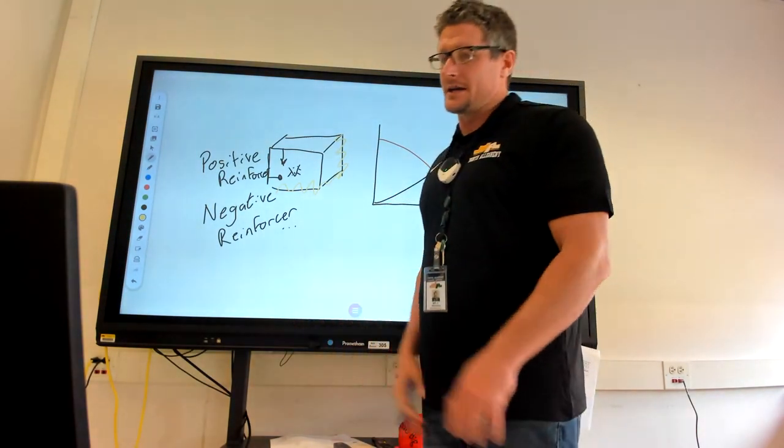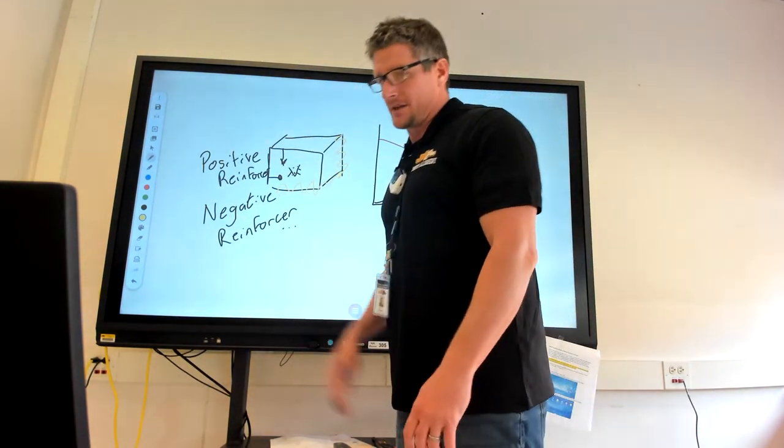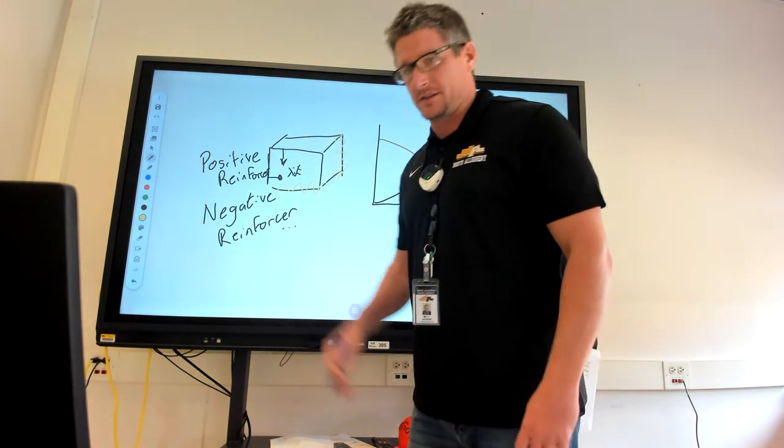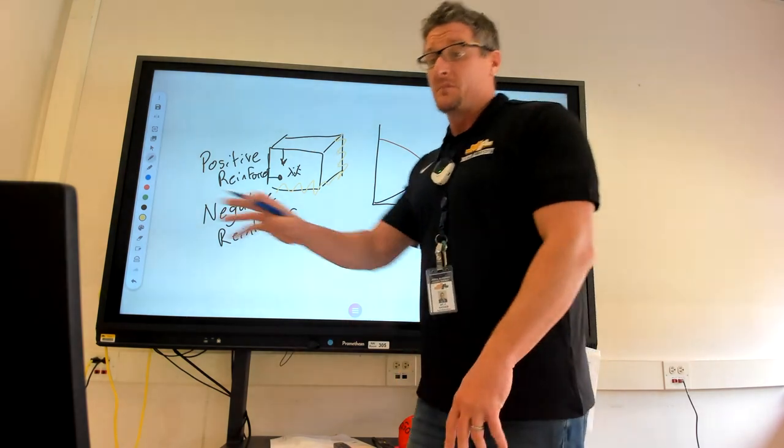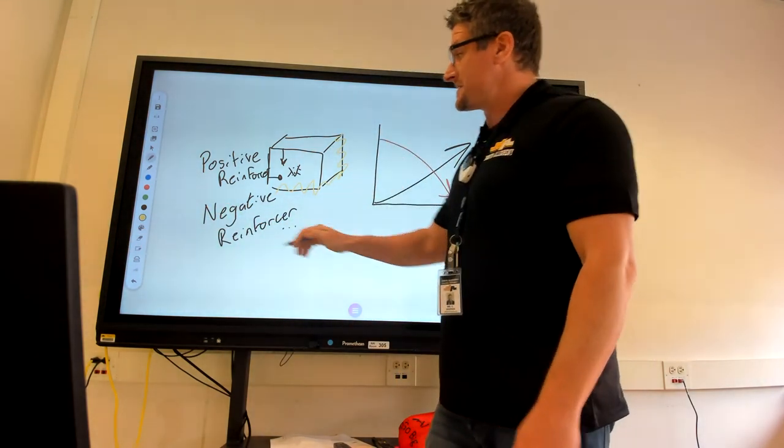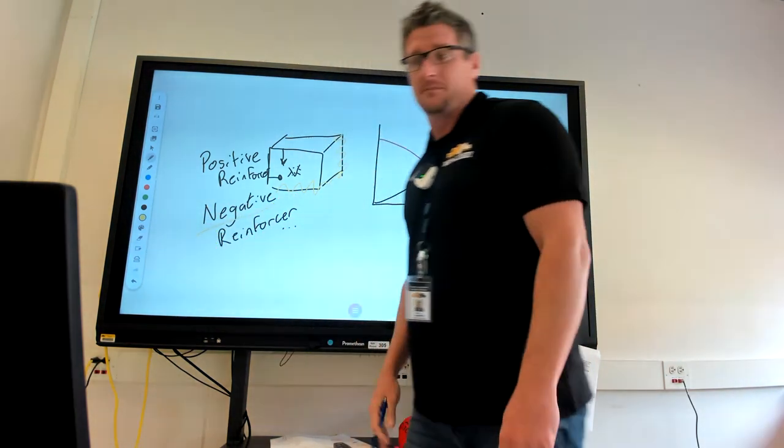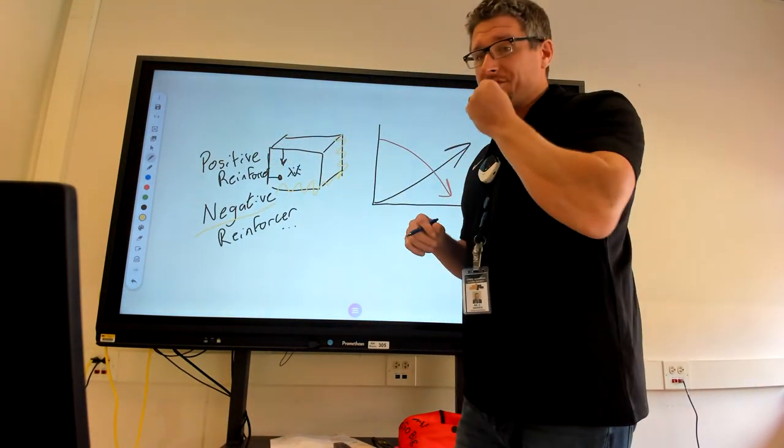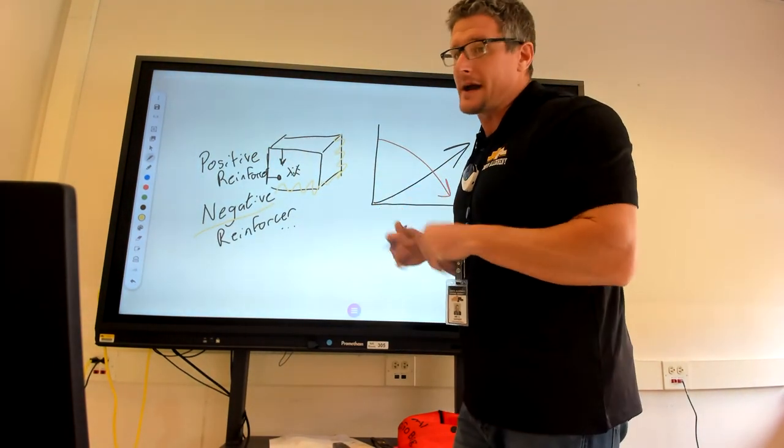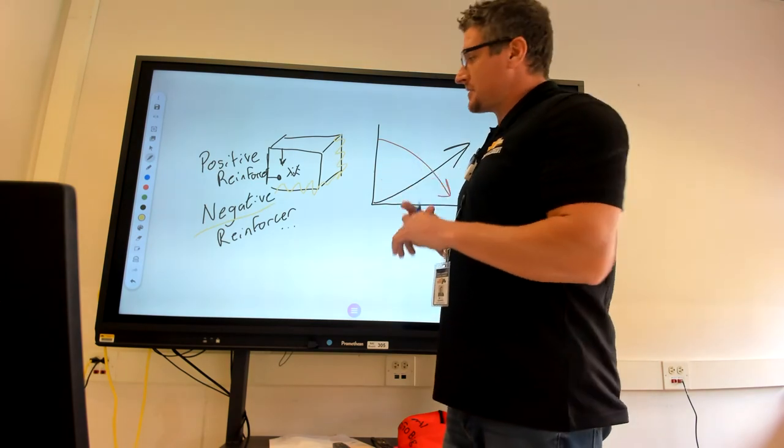Rat says, I don't like getting electrocuted. I'll hit the lever. I'll hit the lever. I'll hit the lever. And every time the rat hits the lever, the electricity shuts off. I'm removing, so it's negative because I'm removing something that's causing the behavior to increase. So in this case, it's electricity running into the rat, which the rat doesn't like, causing the behavior to increase.